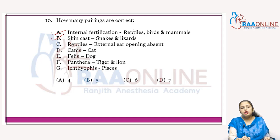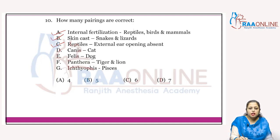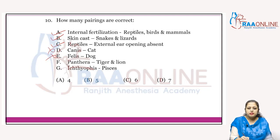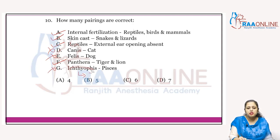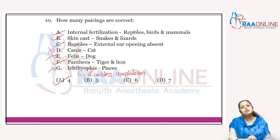Reptiles do not have an external ear opening — that is correct. Canis is the name of the dog, and Felis is the name of the cat — both incorrect as stated. Panthera is the name for tiger and lion — correct. Ichthyophis belongs to Pisces — no, Ichthyophis belongs to Amphibia and is the limbless amphibian. So four pairs are correct — answer is four.